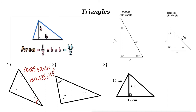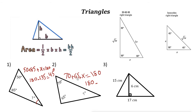Take a look at this one: 70 plus 65 plus X equals 180 degrees. So 180 minus the sum of these two — 70 plus 65 is 135 — so again the missing angle is 45 degrees.